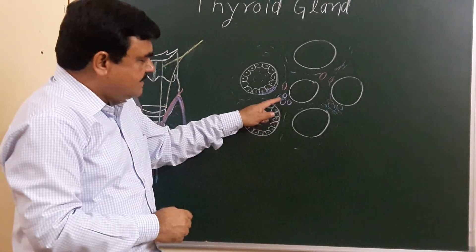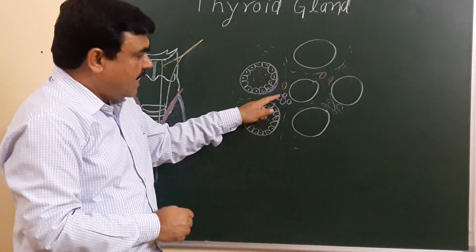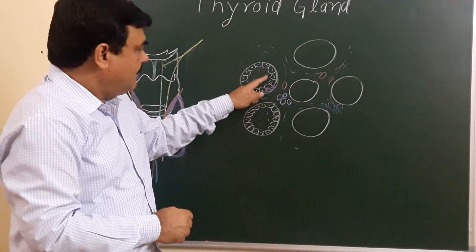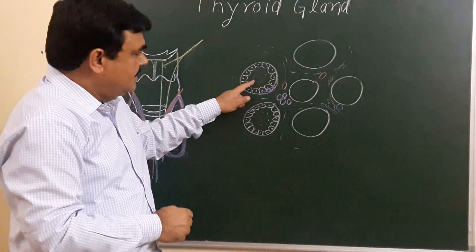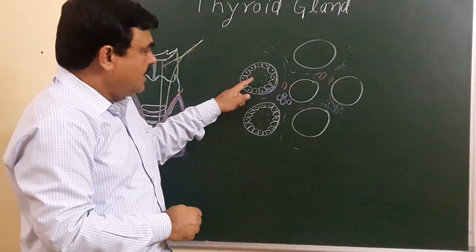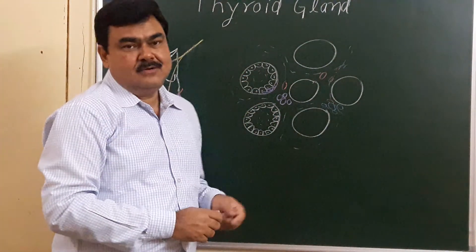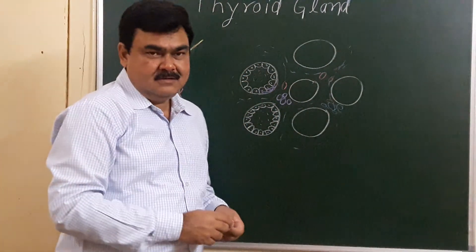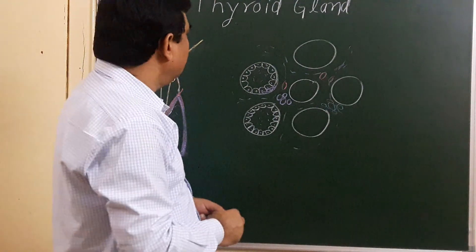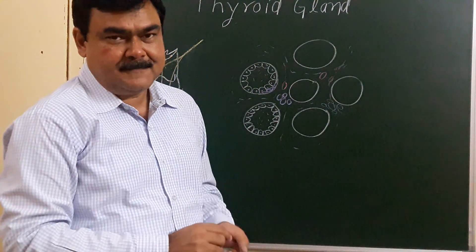Parafollicular C cells secrete calcitonin, and follicular cells secrete triiodothyronine and tetraiodothyronine. This is all about the histology of the thyroid gland.